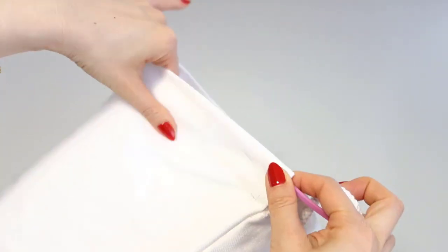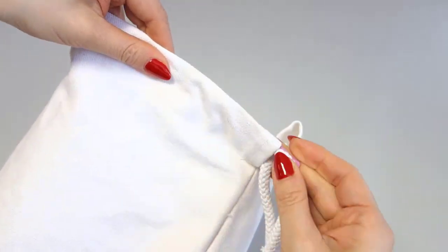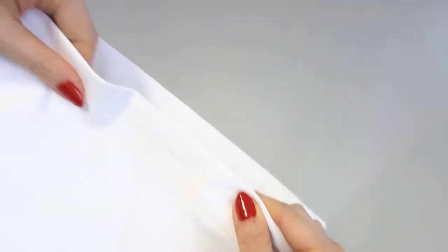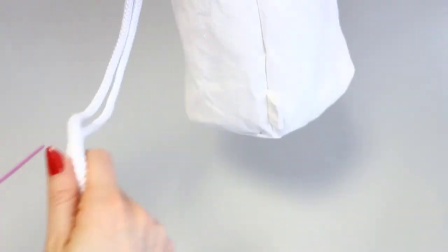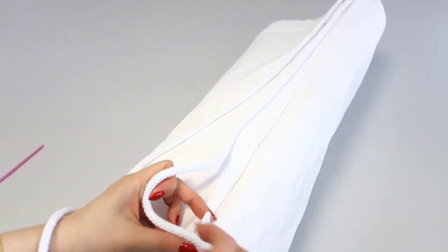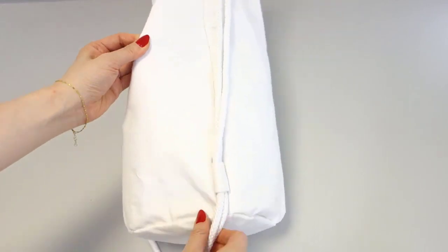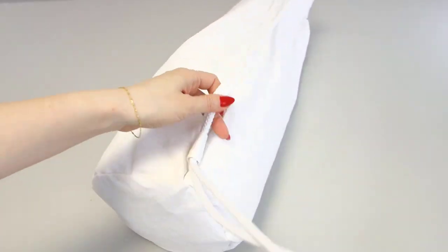Now, thread the drawstring through the piping. Thread both ends of the drawstring through the side tab. And finally, tie a knot to secure it in place.